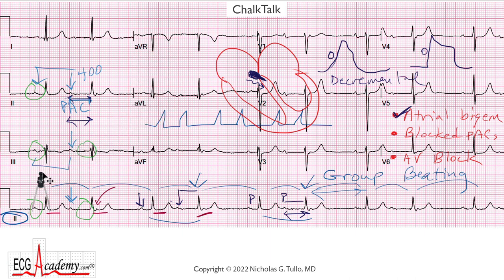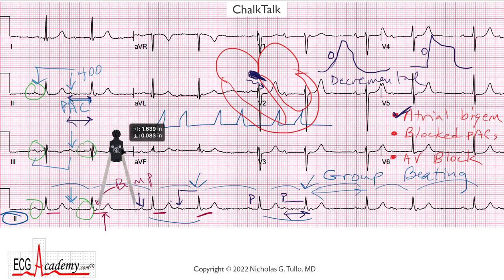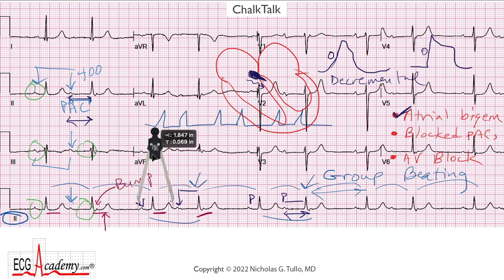Let's set our calipers to the P-to-P interval — looking for the beginning of the P wave, then moving the calipers over to see if that P wave occurs on time. The P wave should have occurred right where the caliper point lands, so what is this bump here? Let's keep measuring and see how things map out. Bringing the calipers over to where we expected the P wave, we see that this one does occur on time, and if we move to the next one, we see that the second P wave is similarly spaced.